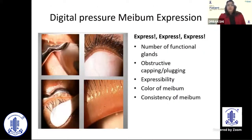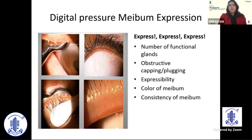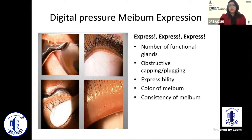An important part of your examination is to express the lids and look at the secretions. Look at the number of functional glands, obstructive capping or plugging, expressibility of the gland, color of the meibum, and consistency of the meibum. The meibum could be clear, toothpaste-like, or cloudy.